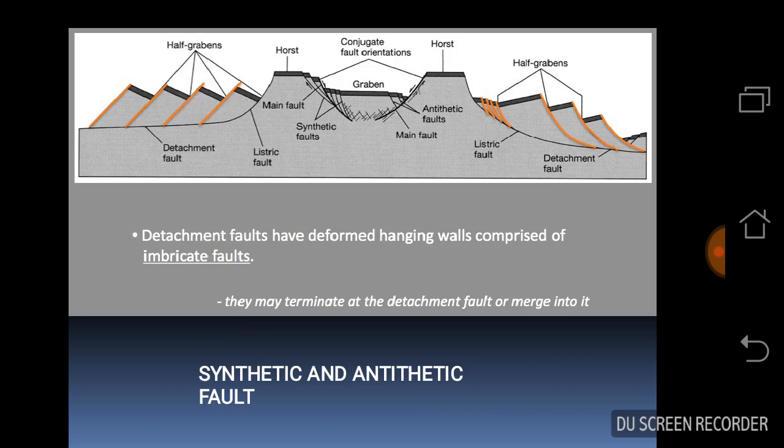Now, synthetic and antithetic faults. Normal faults generally present in a system of many associated faults. In such systems there are two groups where some have major displacement and some have minor displacement. In small-scale faults that are parallel to the major fault and have the same sense of shear, the system is called synthetic fault. On the other hand, if the small-scale faults have conjugate orientation—that is, have comparable dip angles but opposite dip direction and opposite sense of shear—then the system is called antithetic. This picture clearly shows the synthetic and antithetic faults.